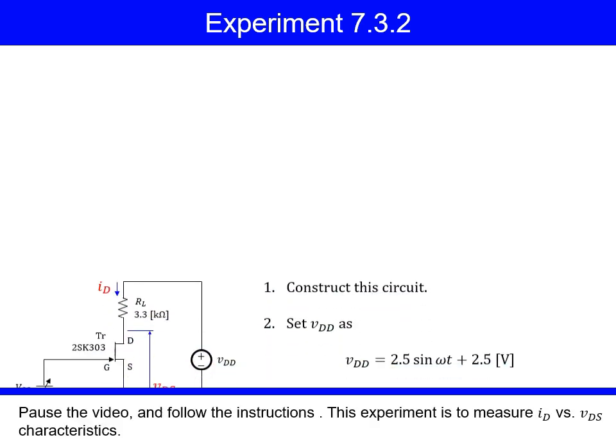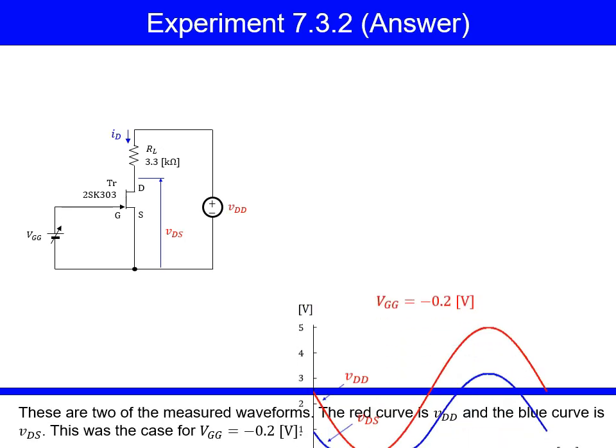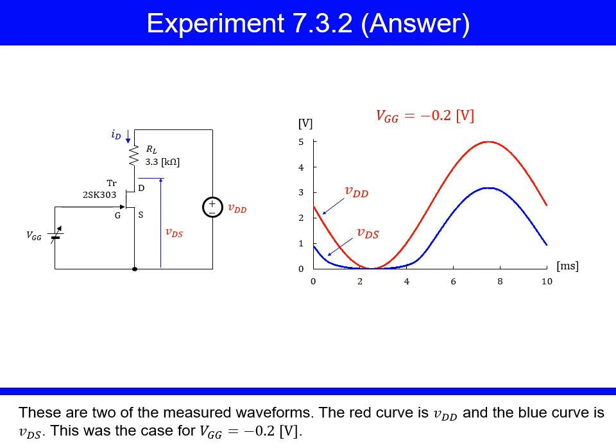Experiment 7.3.2: Pause the video and follow the instructions. This experiment is to measure ID versus VDS characteristics. These are two of the measured waveforms. The red curve is VDD and the blue curve is VDS. This was the case when VGG was negative 0.2 volts.